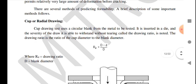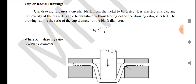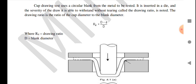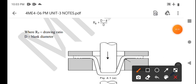There are several methods of predicting formability. A brief description of some important methods follows. The cup or radial drawing test uses a circular blank from the metal to be tested. It is inserted in a die and the severity of draw it is able to withstand without tearing — called the drawing ratio — is noted. The drawing ratio is the ratio of the cup diameter to the blank diameter. The equation is: Rd = (D - d) / D, where Rd is the drawing ratio, D is the blank diameter, and d is the cup diameter.